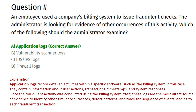The next question is: an employee used a company's billing system to issue fraudulent checks. The administrator is looking for evidence of other occurrences of this activity. Which of the following should the administrator examine? Option A: Application Logs. Option B: Vulnerability Scanner Logs. Option C: IDS/IPS Logs. Option D: Firewall Logs. The correct answer is Option A, Application Logs.